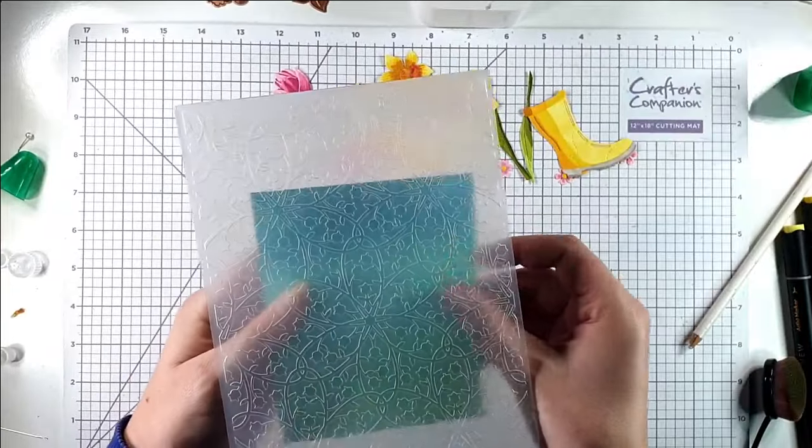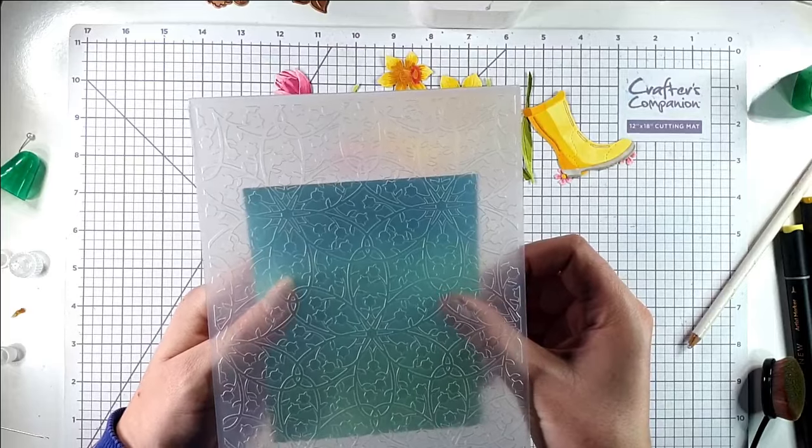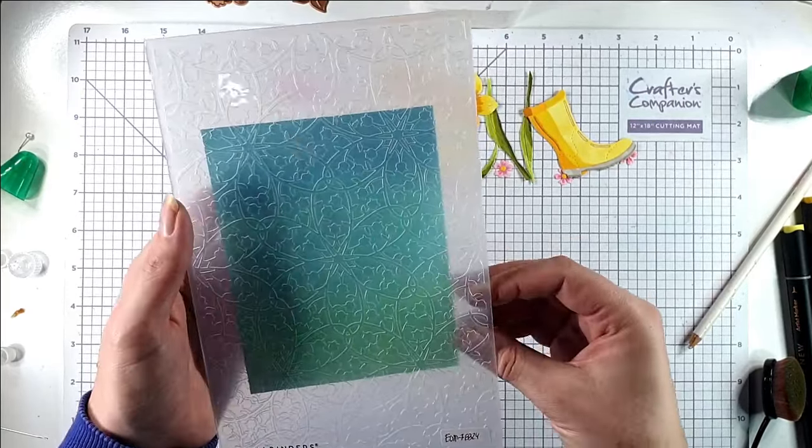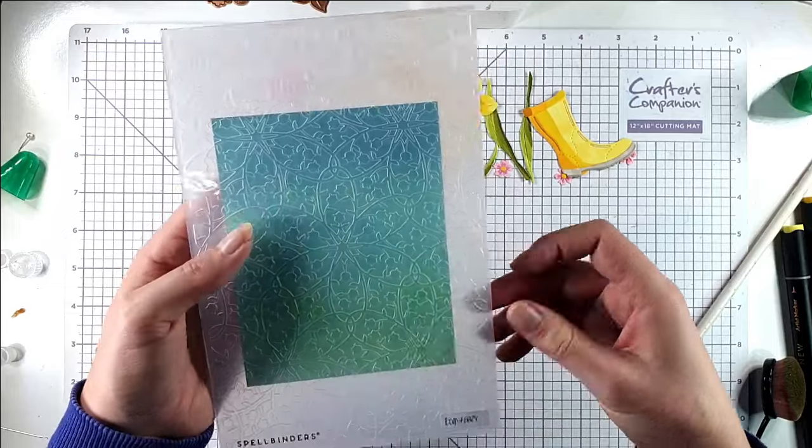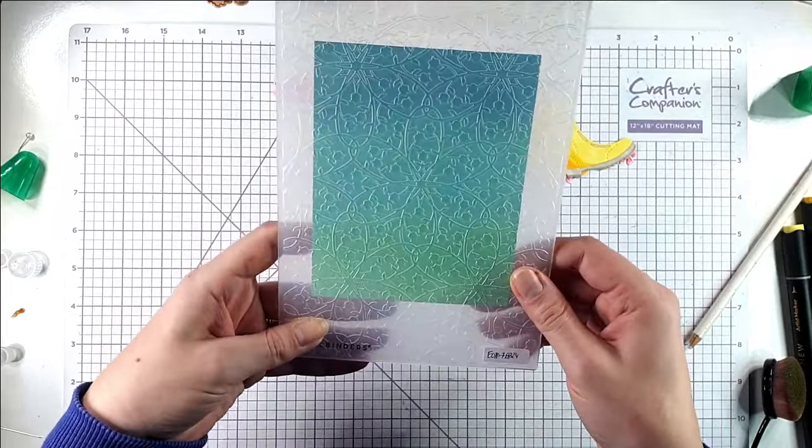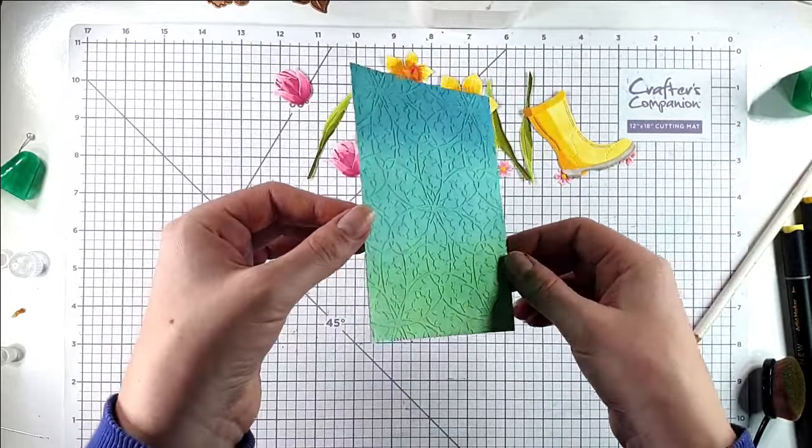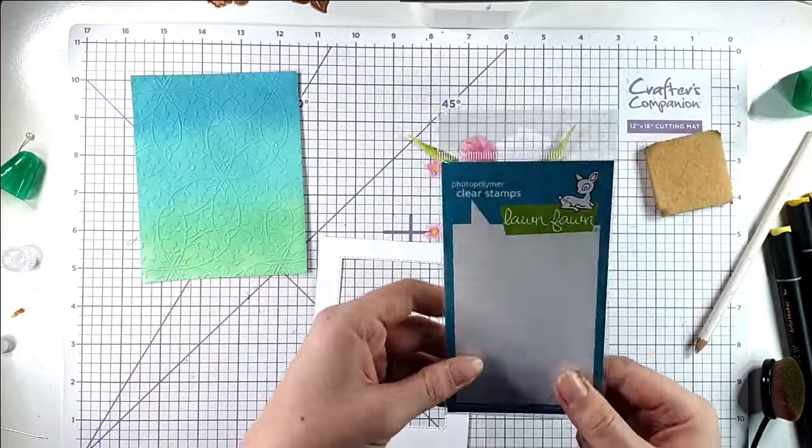Then I'm going to pop that inside my embossing folder, which is the embossing folder of the month for February from Spellbinders. It's a really pretty floral pattern, so now we've got this pretty pattern background.